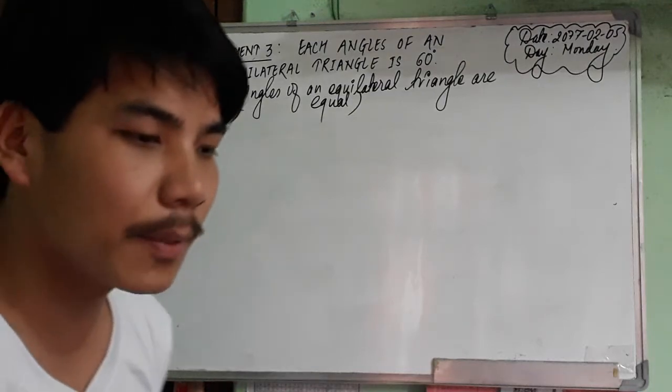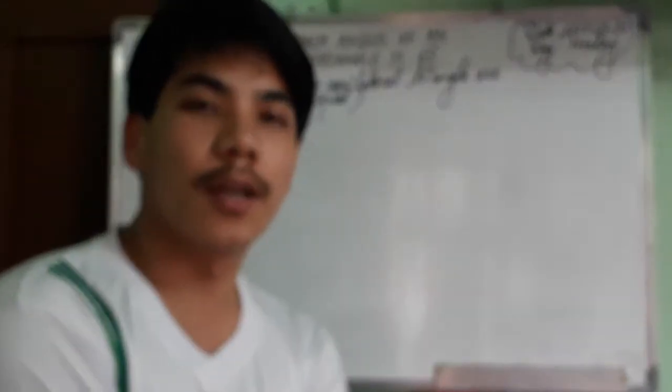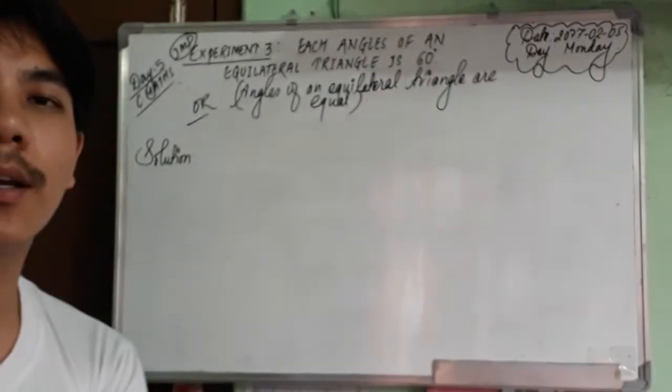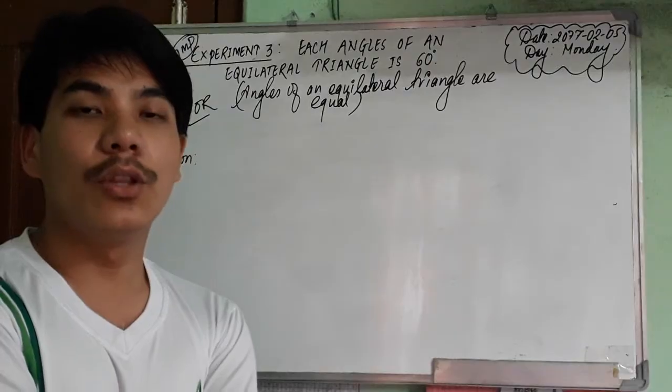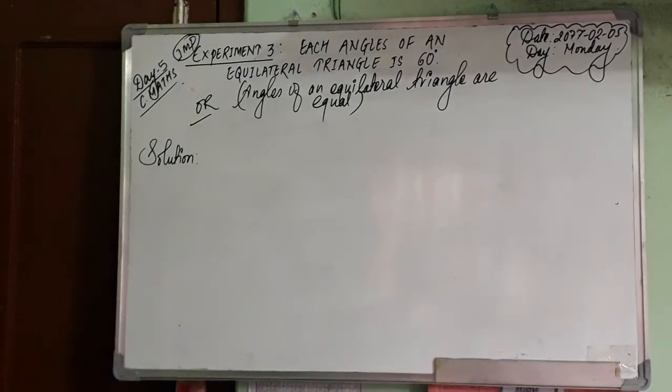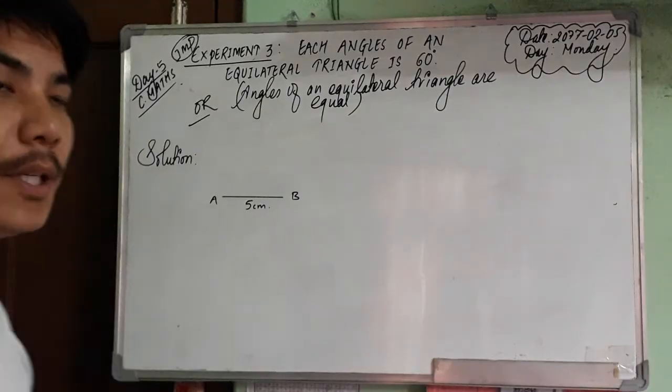You can directly use the equilateral triangle to make the triangle. Let's make three equilateral triangles having different lengths. Construct a line segment AB of 5 centimeters on your copy.